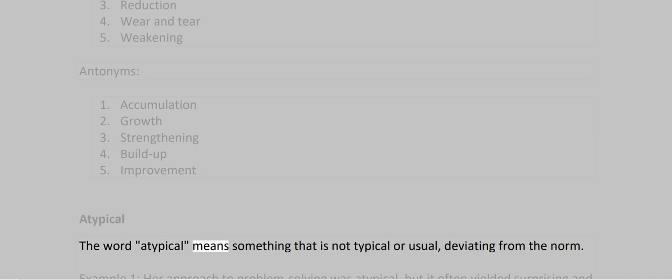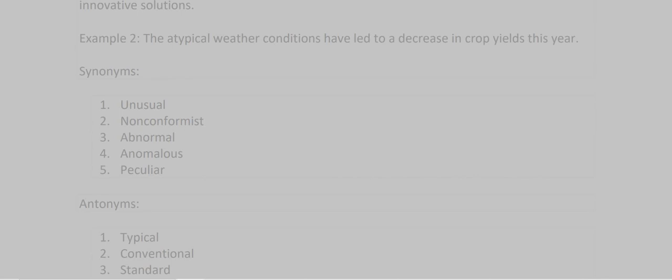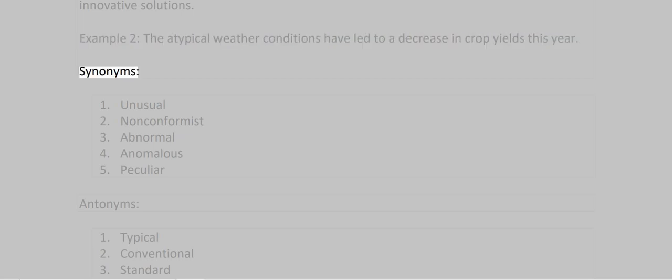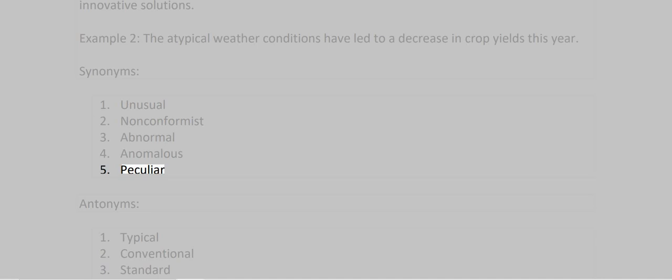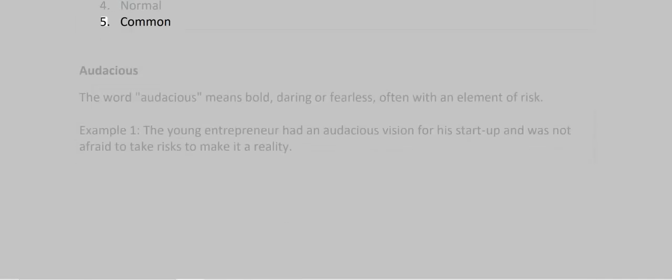Atypical. The word atypical means something that is not typical or usual, deviating from the norm. Example 1: Her approach to problem-solving was atypical, but it often yielded surprising and innovative solutions. Example 2: The atypical weather conditions have led to a decrease in crop yields this year. Synonyms: 1. Unusual 2. Non-conformist 3. Abnormal 4. Anomalous 5. Peculiar. Antonyms: 1. Typical 2. Conventional 3. Standard 4. Normal 5. Common.